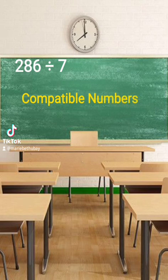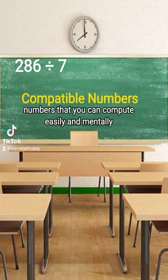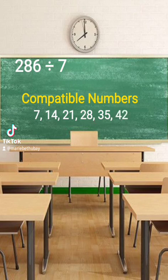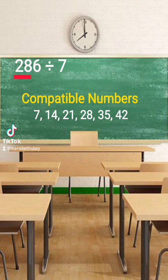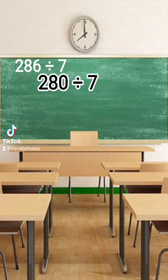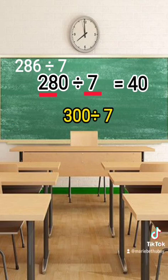So, what are compatible numbers? These are numbers that you can compute easily and mentally. Since we're dividing by 7, the numbers that 7 goes into easily are 7, 14, 21, 28, 35, 42, and so on. We have 28 here, and we want a number that 7 can go into mentally. So we keep 28 and everything after it becomes 0, making it 280 divided by 7. This is something we can do in just a few seconds — 28 divided by 7 is 4, so 280 divided by 7 is 40. That's much easier than trying to figure out 300 divided by 7.